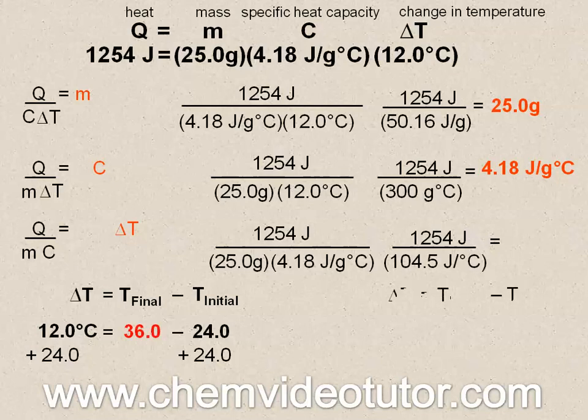Using the same formula, you can also figure out what the initial temperature is if you know how much the change in temperature is and they give you the final temperature in the question. So, 36 minus what initial temperature would give you a change in temperature of 12? That's right, 24 degrees.